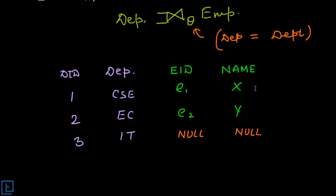This is how left outer join works; similarly right outer join and full outer join work, which we will see in SQL. To revise: we have two types of joins — inner join and outer join. Inner join has three types based on the joining condition: theta join, equi join, and natural join. Outer join also has three types: left outer join, right outer join, and full outer join. We will see more examples and direct SQL queries in the SQL section.